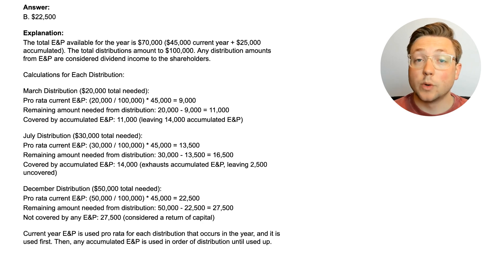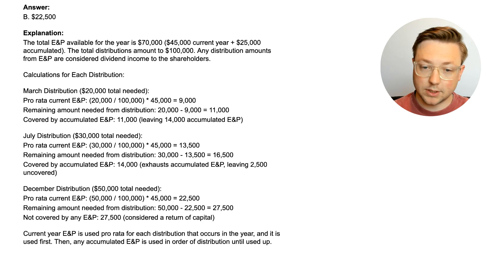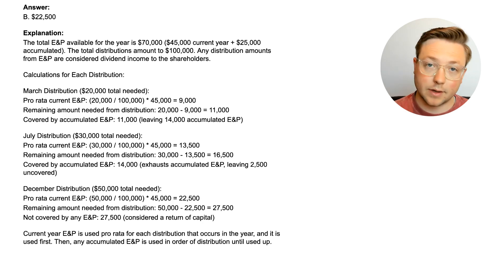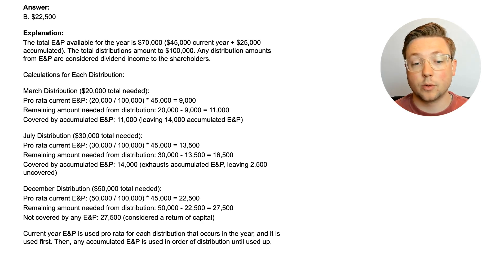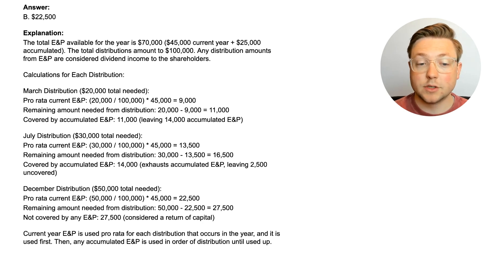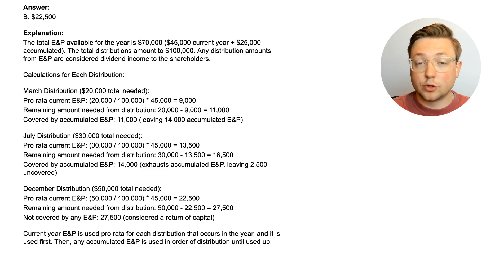The answer is $22,500 will be a dividend in the December distribution. It's a bit more complicated now. The total E&P available for the year is $70,000 — that's the $45,000 of current E&P and the $25,000 of accumulated. The total distributions amount to $100,000. Any distribution amounts from E&P are considered dividend income to the shareholder. However, when there are multiple distributions throughout the year, you have to do pro-rata.